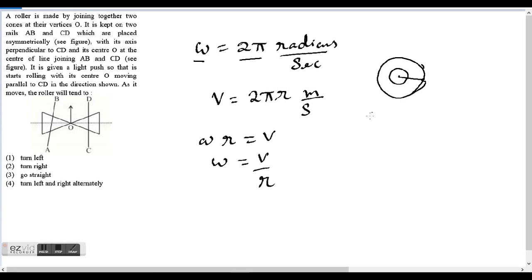And what will be its linear velocity? Its linear velocity will be—we know that the outer circumference of circle is 2π times the radius—so its linear velocity will be 2πr meters per second.